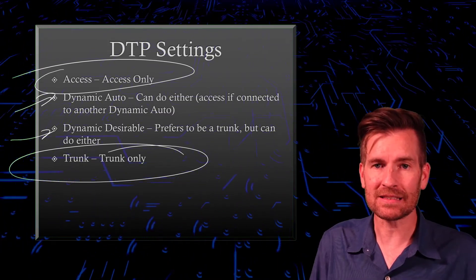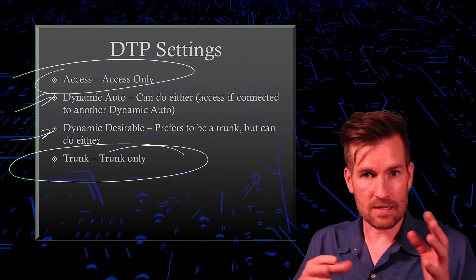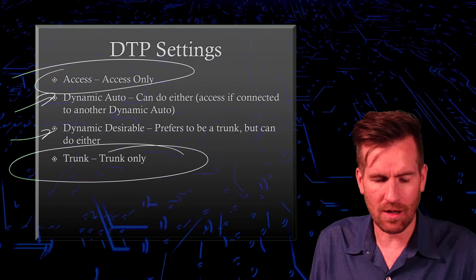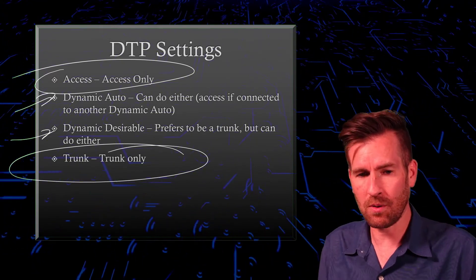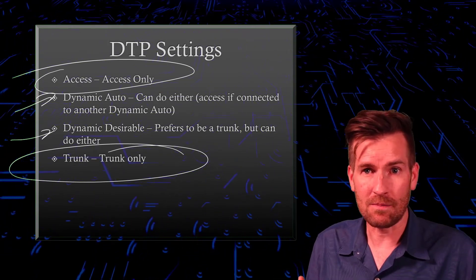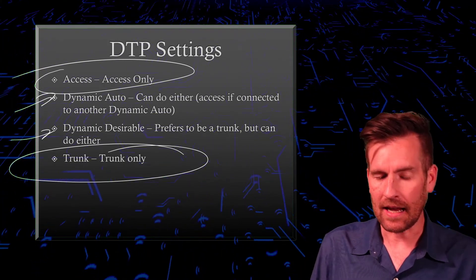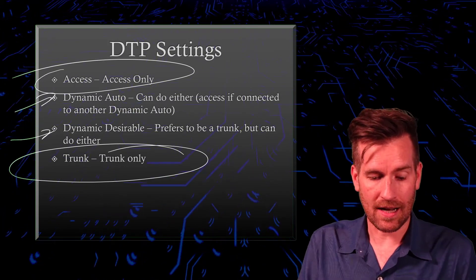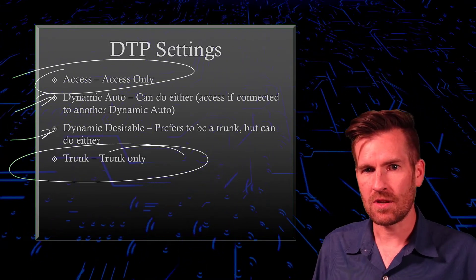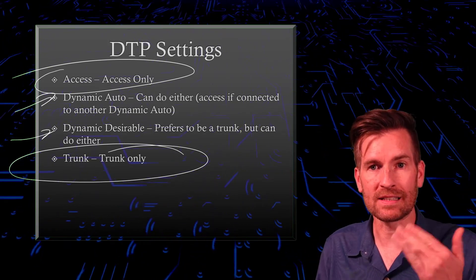Dynamic desirable can also fall back to an access port if needed. Dynamic auto, on the other hand, says: I'll work with whatever is on the other side. If it's an access port, I'll be an access port; if it's a trunk port, I'll be a trunk port. If the other side is dynamic desirable, we'll both become trunk ports. But if two dynamic auto ports connect to each other, they'll establish an access port instead. So depending on your intentions, you may want to set ports up differently.